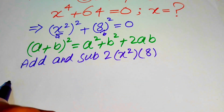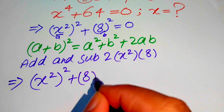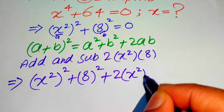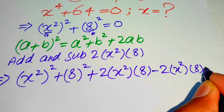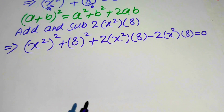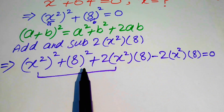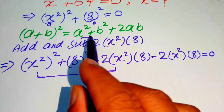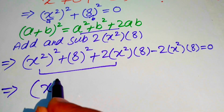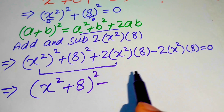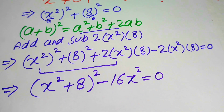When we add this term on the left-hand side, it will be written as x squared whole squared plus 8 squared plus 2 times x squared into 8, minus 2 times x squared into 8, equals 0. Focusing on that group, when we complete the square it becomes x squared plus 8 whole squared, minus 16 times x squared, equals 0.